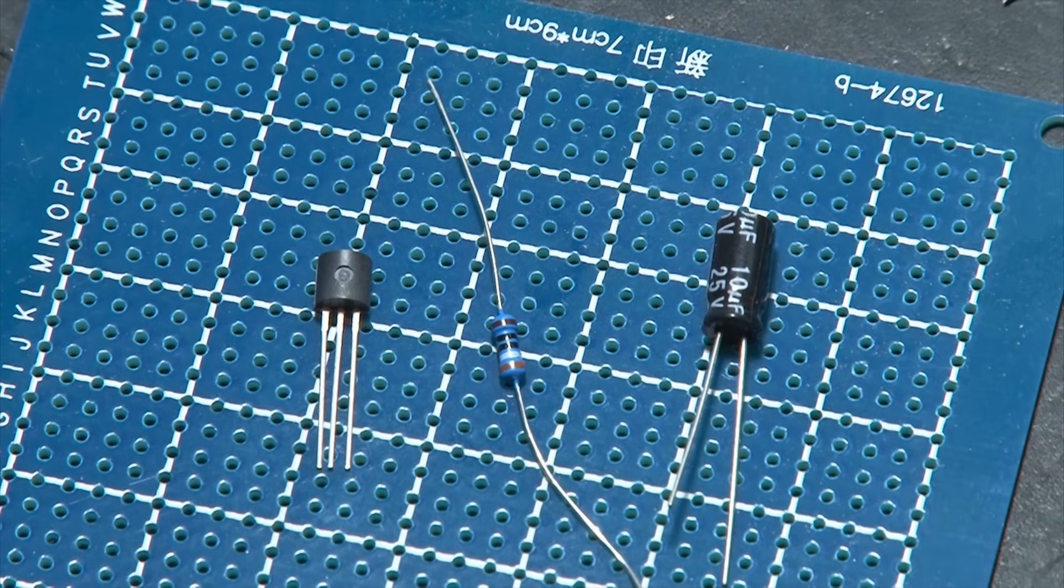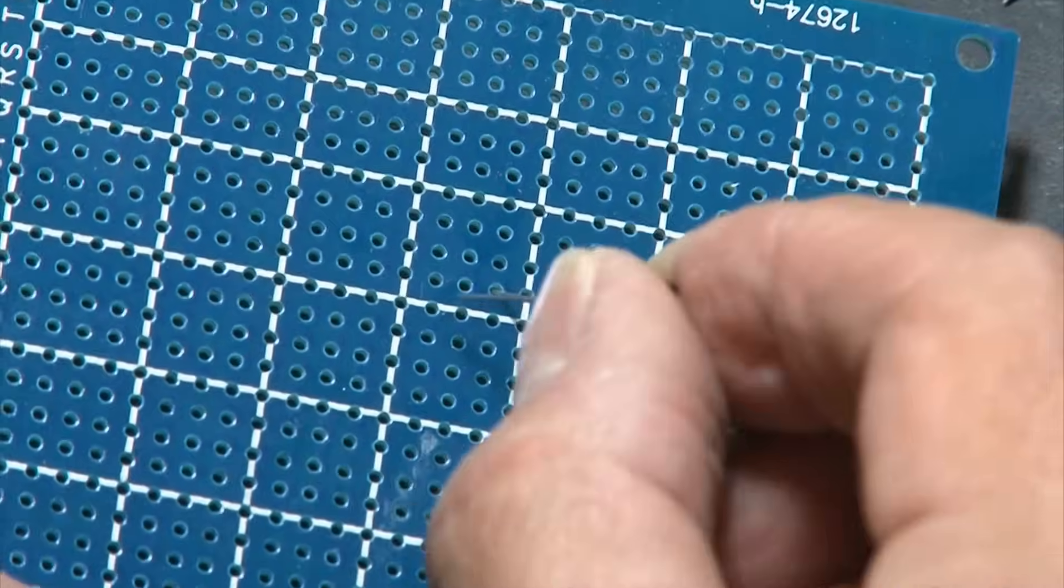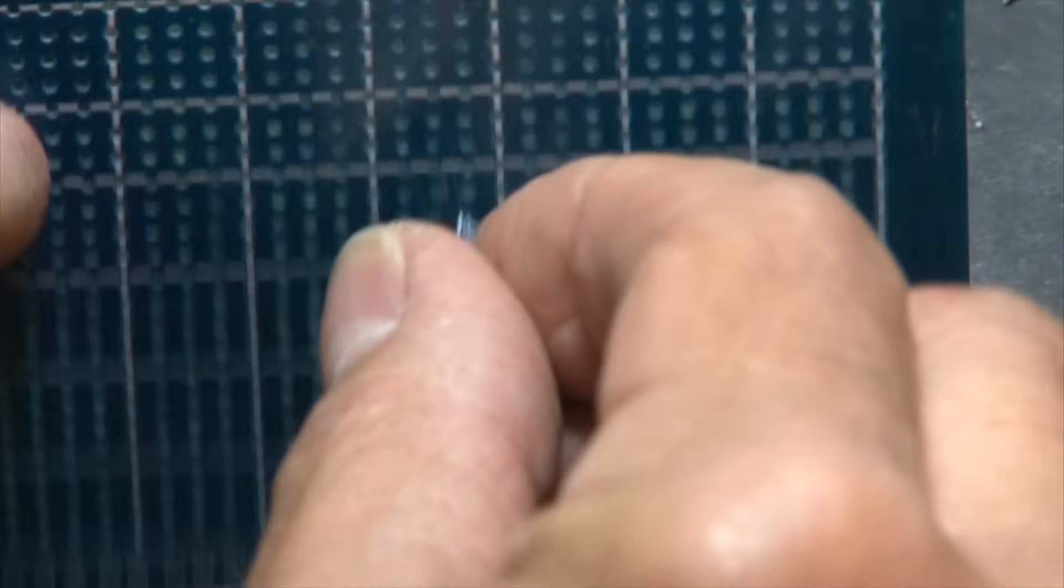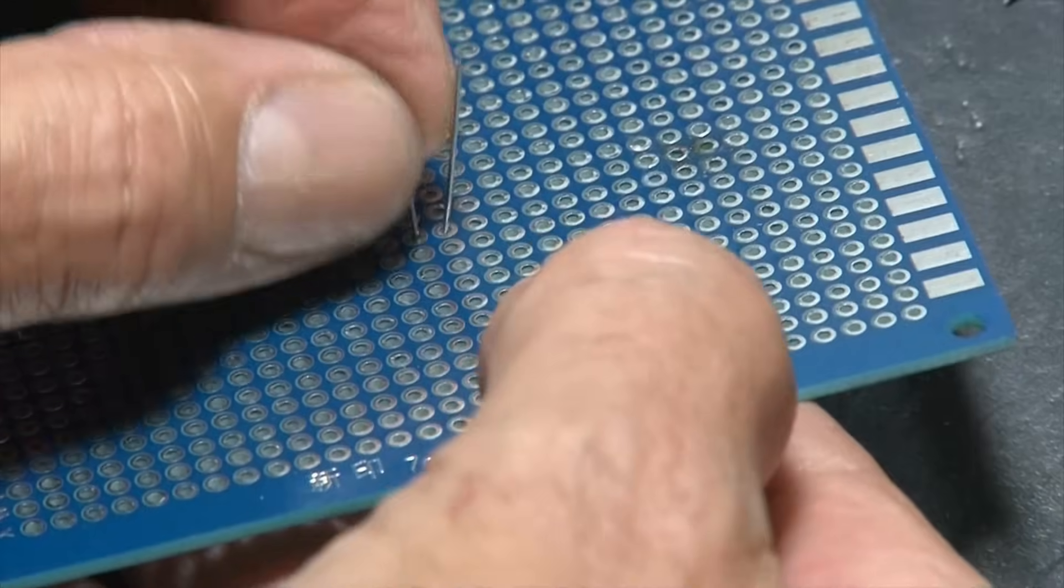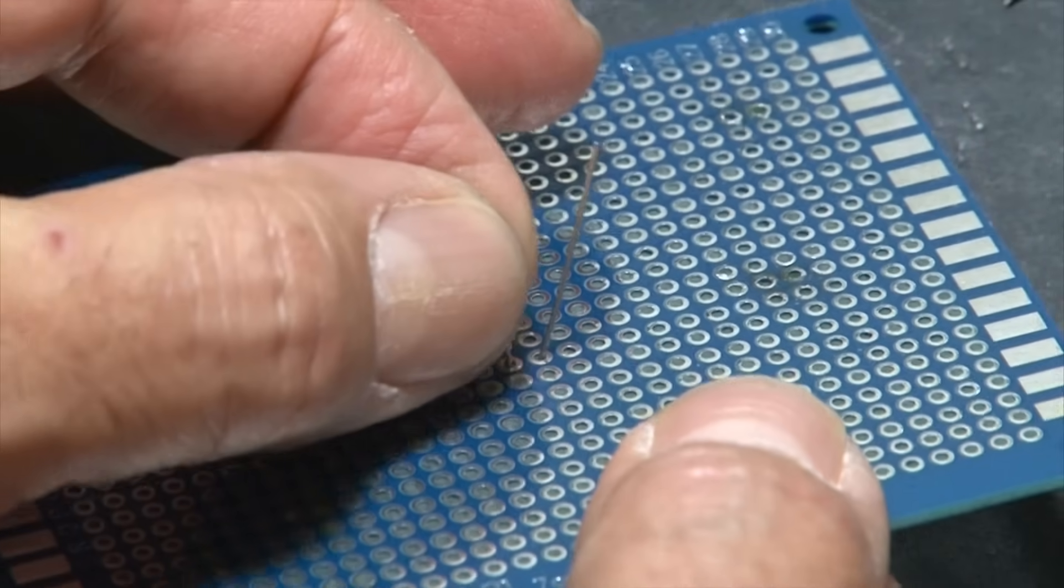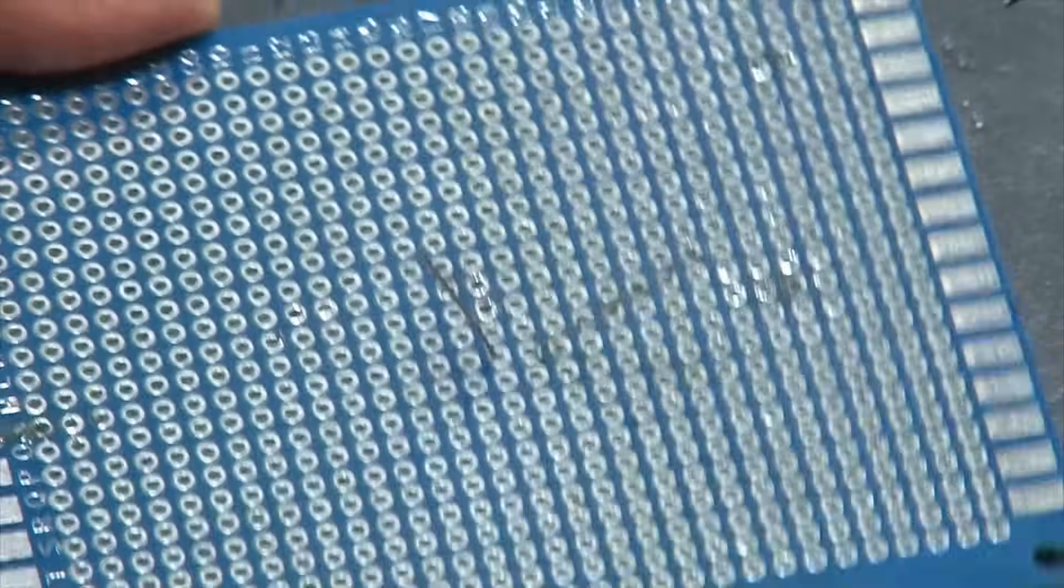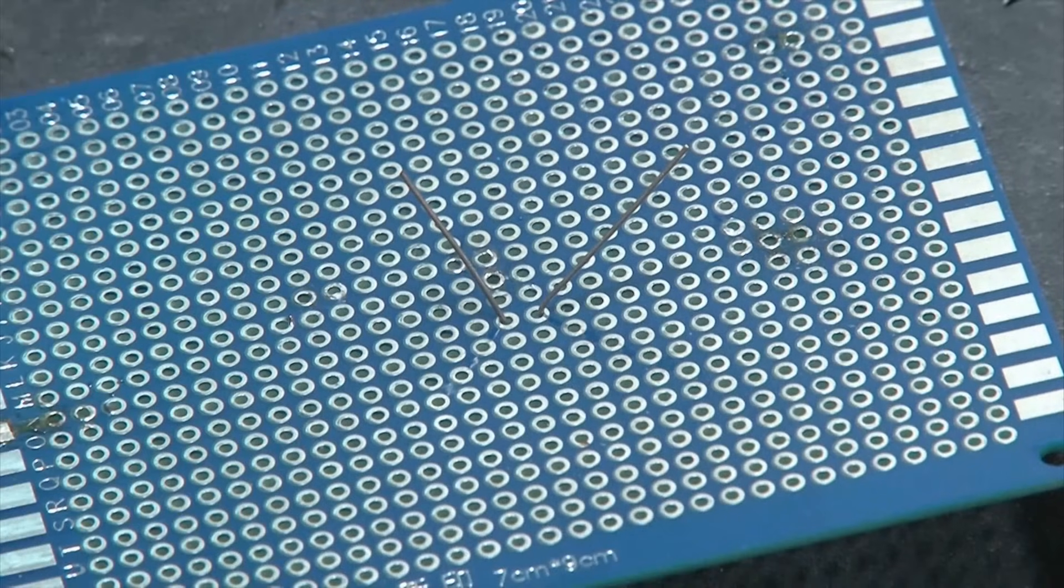Now to solder other components like transistors, resistors, and capacitors, there's an easy way to get them to stay in place, because once you flip the board over, they're going to fall out. Once you insert your component and flip it over, all you have to do is bend the leads just a teeny little bit so the component stays in place. Don't bend them too far, because when you're done making those solder connections, you're going to want to clip those leads.